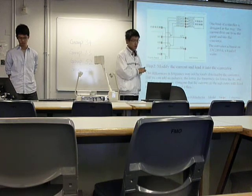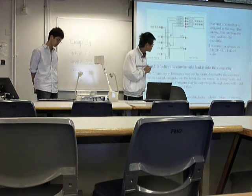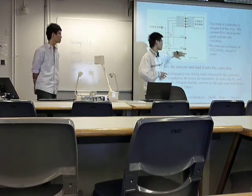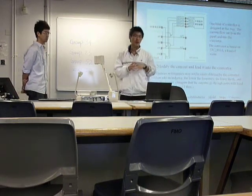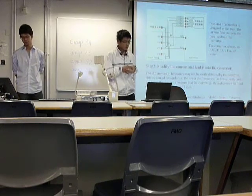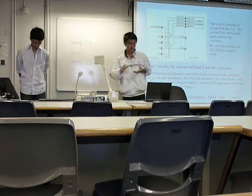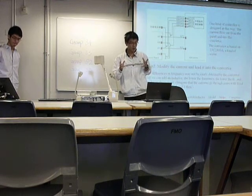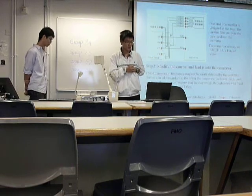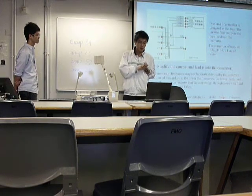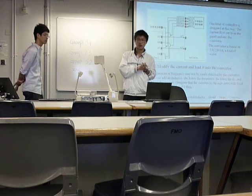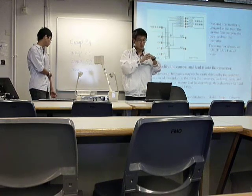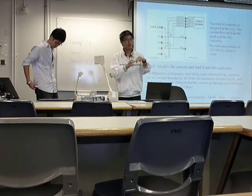The second step is to modify the current and feed it into the converter controller. This is a kind of controller based on a type of chip. The differences in frequency may not be easily detected by the controller, so we have to modify it. One way to modify the current is to add an inductor — remember the formula: the lower the frequency, the lower the resistance, and the larger the current. So some columns and rows will have a larger current flowing into the converter.